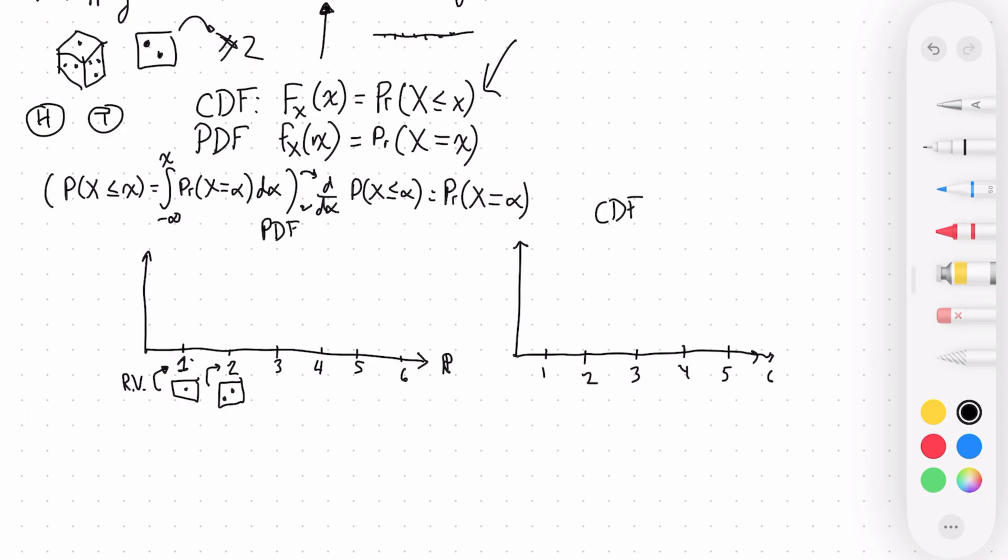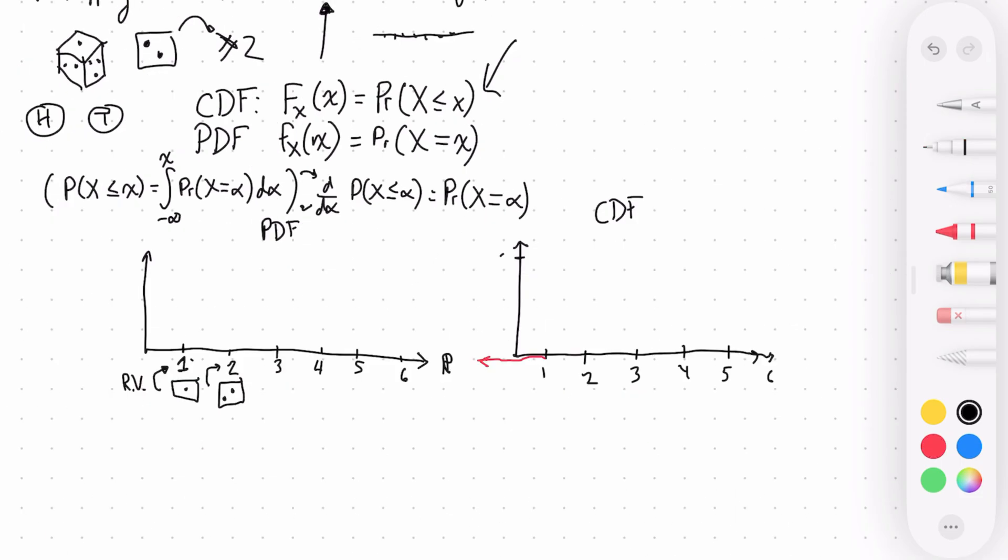The probability that we land on a number less than one is of course zero, because you can't get anything less than one. And the probability that you get a number less than or equal to six is going to be one, because the probability that you roll a number on the face of the die that's less than or equal to 20 is going to be one, because you can only go from one to six. And then what we see is we see these sort of punctuated places at one, we basically increase this by one-sixth at every step of the way. So I didn't draw this very well, but each of these is one-sixth, two-sixths, three-sixths, et cetera.